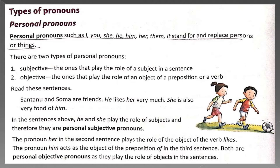And let us look at the textbook. Personal pronouns such as I, you, she, he, him, her, them — they stand for and replace persons or things. There are two types of personal pronouns. The first one is Subjective, and the second is Objective.